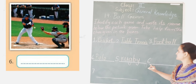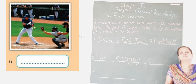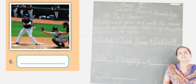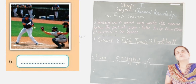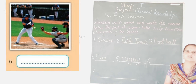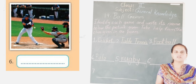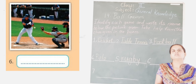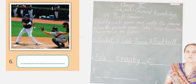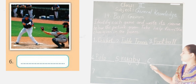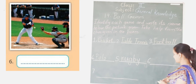Now the sixth one — which game is it, children? That is baseball. In this game the players also use a bat to hit the ball to score points. So this game is baseball. Children, write down baseball.